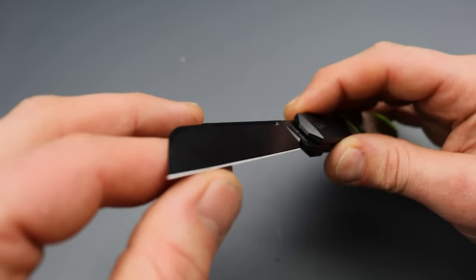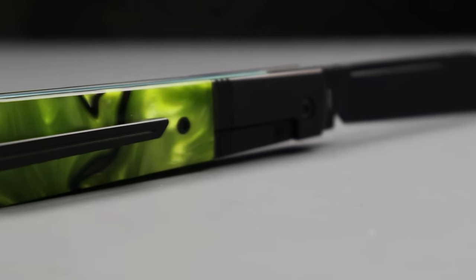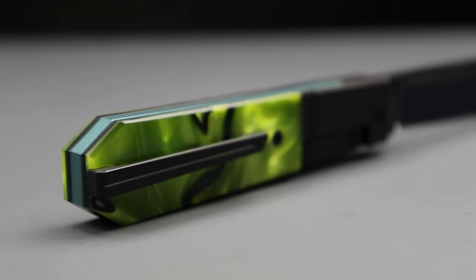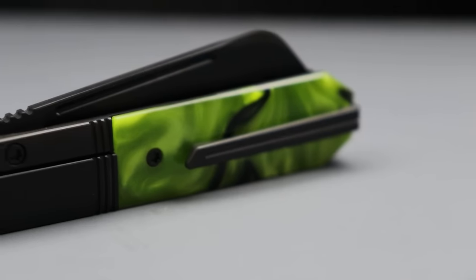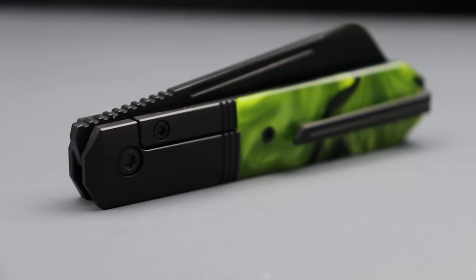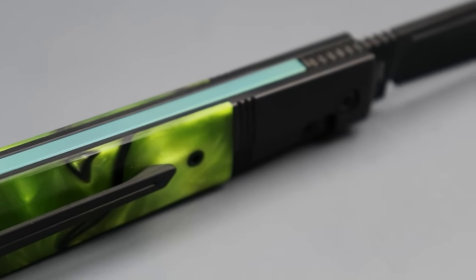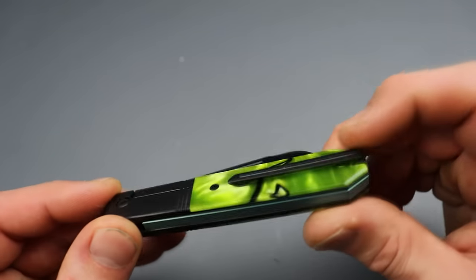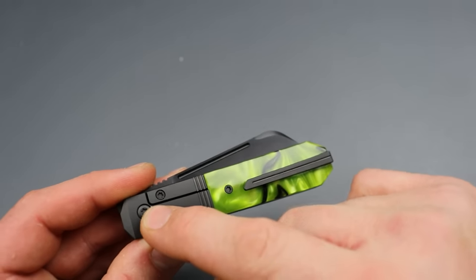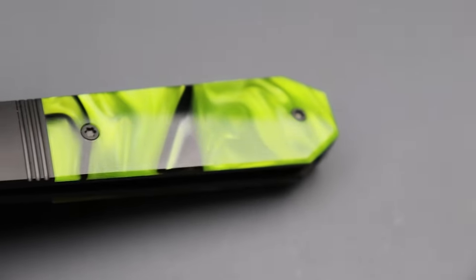It stays that thin, moving up the blade quite a bit. Amazing geometry. It does have two forms of deployment. Bolster lock, as you can see. Full titanium backspacer, titanium milled pocket clip. T10 pivot, T8 hardware all the way around.